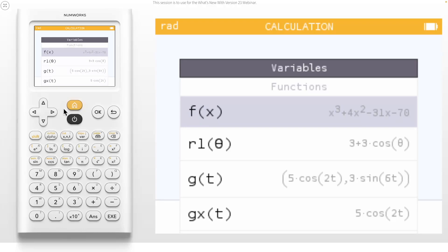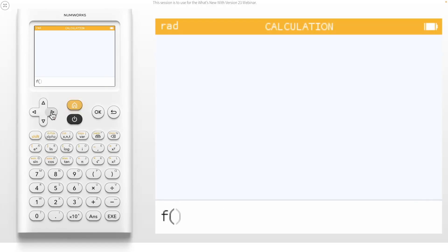The next new feature is the support of the prime notation for evaluating the derivative. Let's find the derivative of f of x for x equals 2. Press OK on f of x. We can add the prime symbol by using alpha and the toolbox key. Enter a 2 in the parentheses to get the value of the first derivative of f when x equals 2.